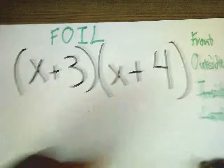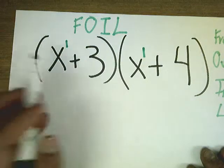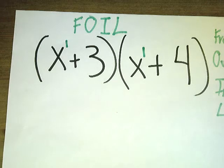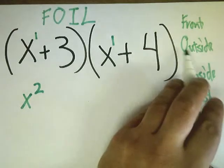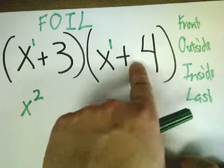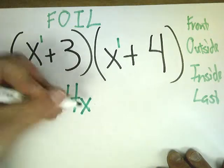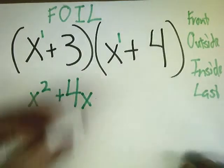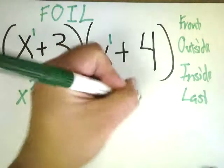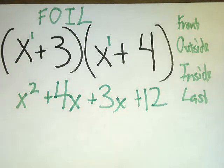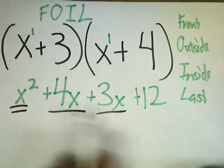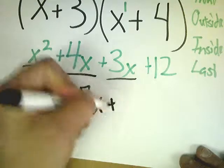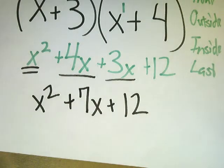The front numbers are x and x. This is x to the first power, and so is this. If I multiply two variables together, I actually add their exponents. So x and x gives me x squared. Now I look at outside, so I do x times positive 4, so that would be 4x. Then I do inside, so 3x. Then I do last, so I do 4 times 3 is 12. I have to combine my like terms. 4x and 3x, that would be 7x. So my final answer is x squared plus 7x plus 12.